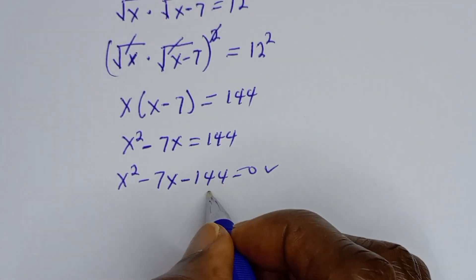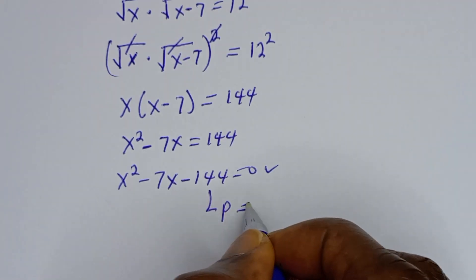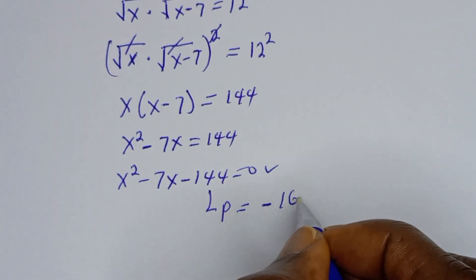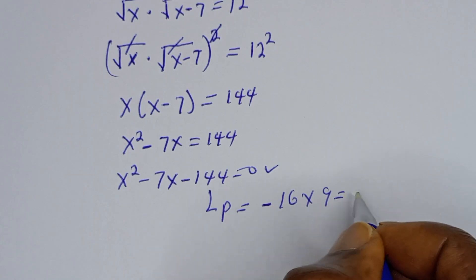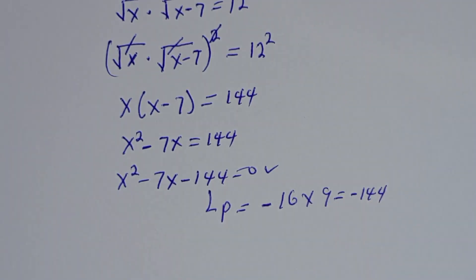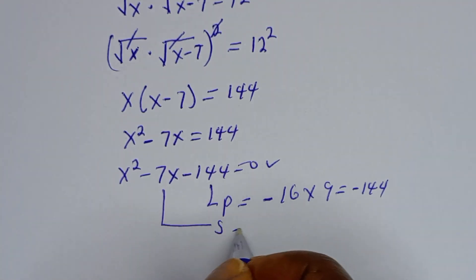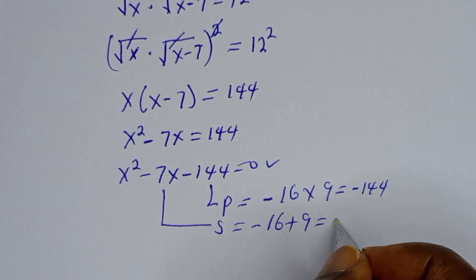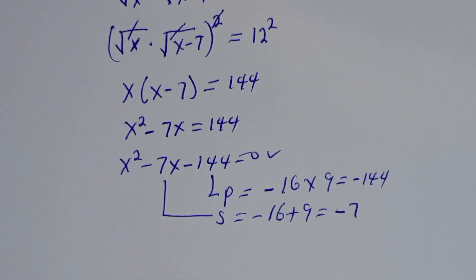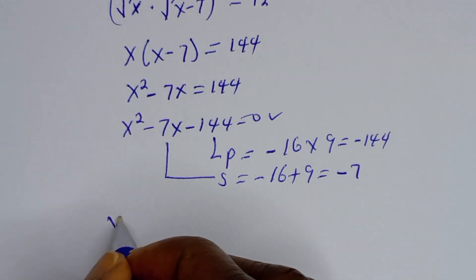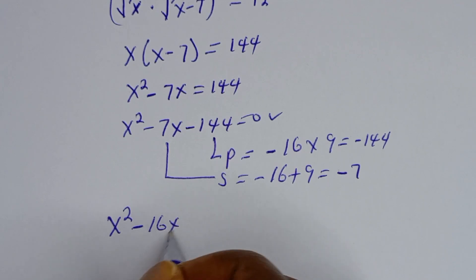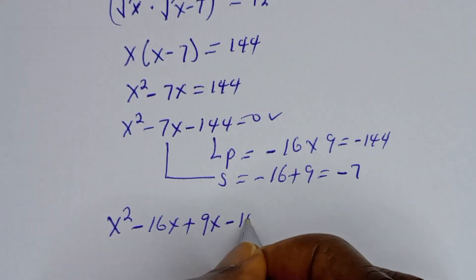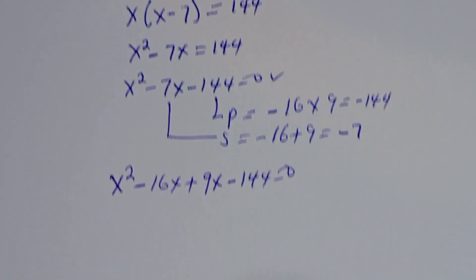The product is equal to minus 144. We need two numbers: minus 16 multiplied by 9 gives minus 144, and their sum is minus 16 plus 9 which equals minus 7. We can substitute to get: s squared minus 16s plus 9s minus 144 is equal to 0.